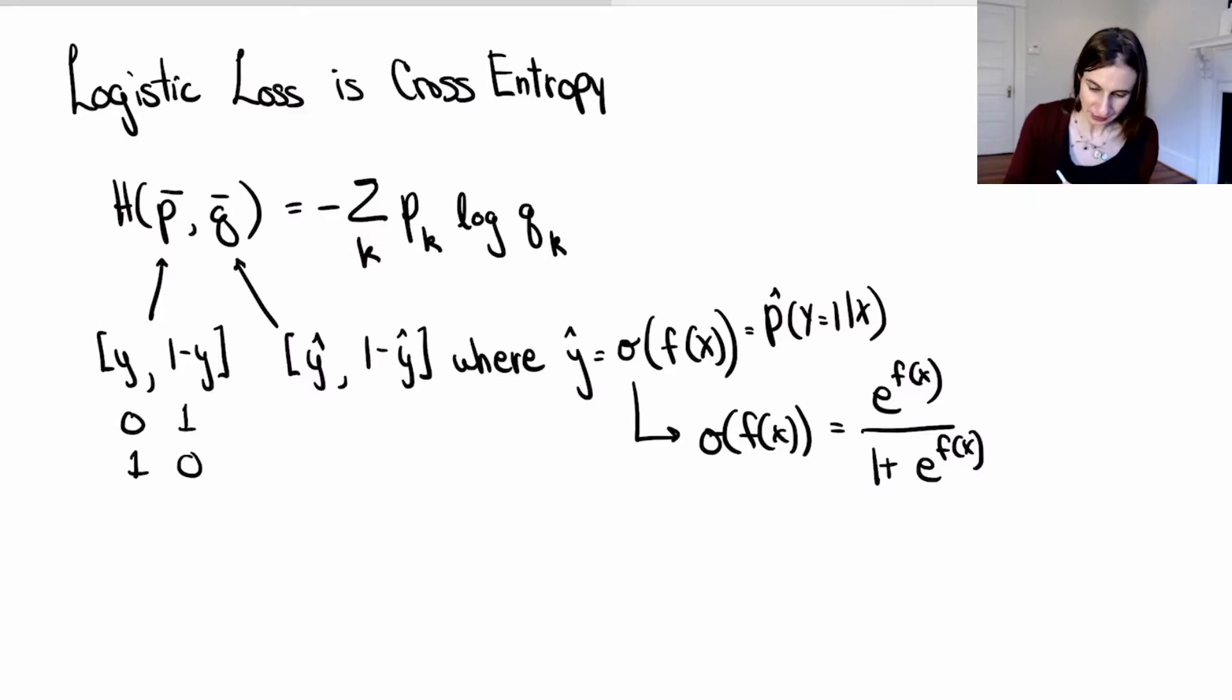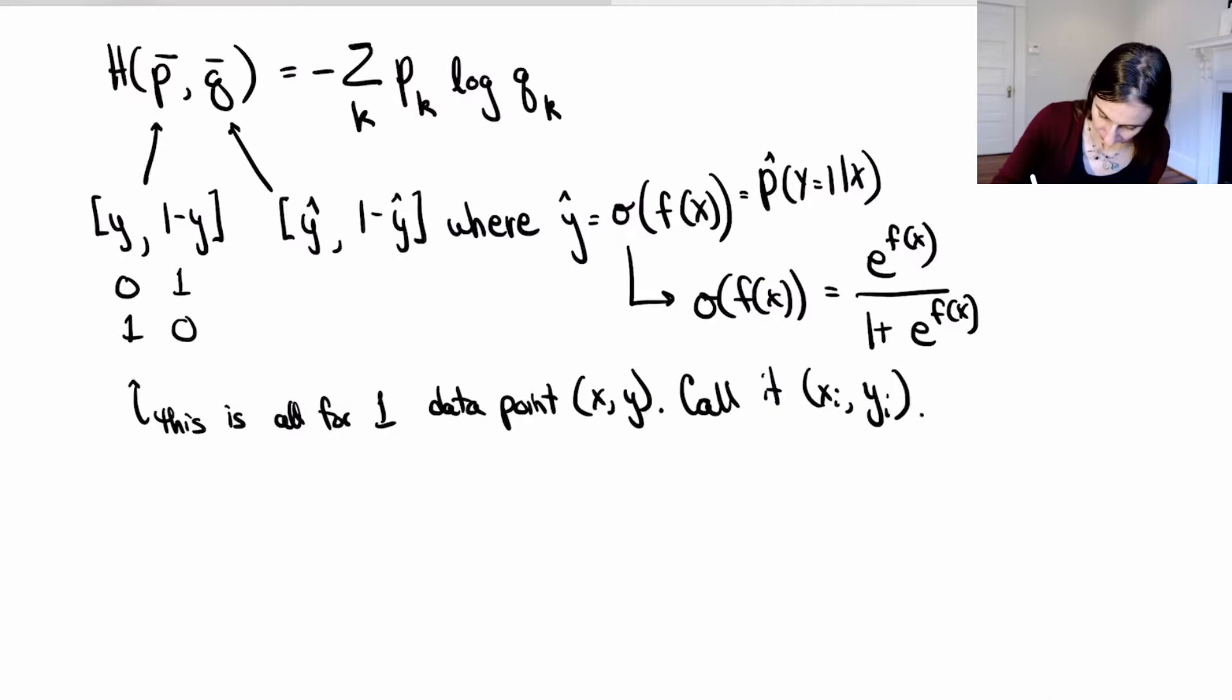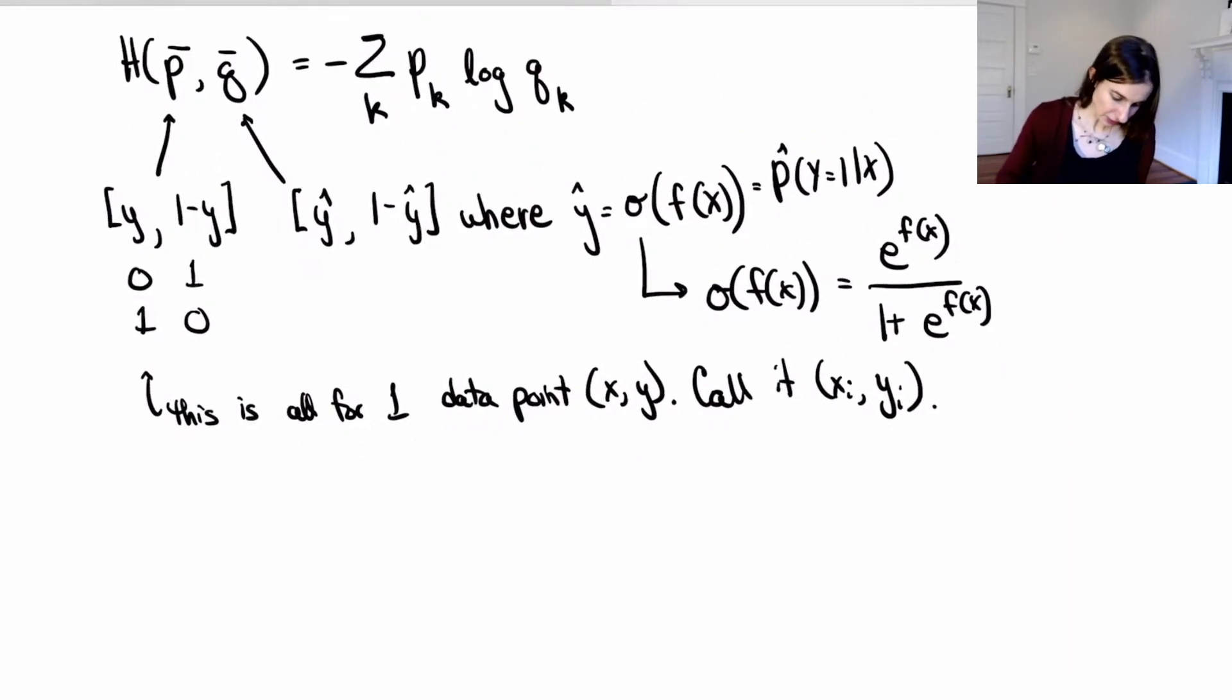These calculations are for one data point, and the one data point is called x, y. So I'm going to call it x_i, y_i, because I want you to see how when you're going to sum up these terms, it's the sum over data points. So let's write down the cross entropy here. So it's H of the first distribution, which is y and 1 minus y, and then the second distribution, which is y hat, 1 minus y hat.